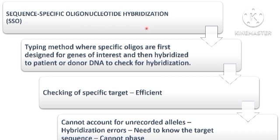Sequence specific oligonucleotide hybridization, or SSOP, is a hybridization-based method that uses sequence specific oligonucleotide probes to detect specific HLA alleles. DNA is extracted from the patient sample, amplified using PCR, and the amplified DNA is then exposed to a panel of probes. Each probe is designed to target a specific HLA allele. If a probe finds a complementary sequence in the amplified DNA, it indicates the presence of the corresponding HLA allele. The advantage is that it is an efficient technique; however, it cannot account for unrecorded alleles, hybridization errors can occur, and the target sequence must be known prior to designing the probes.